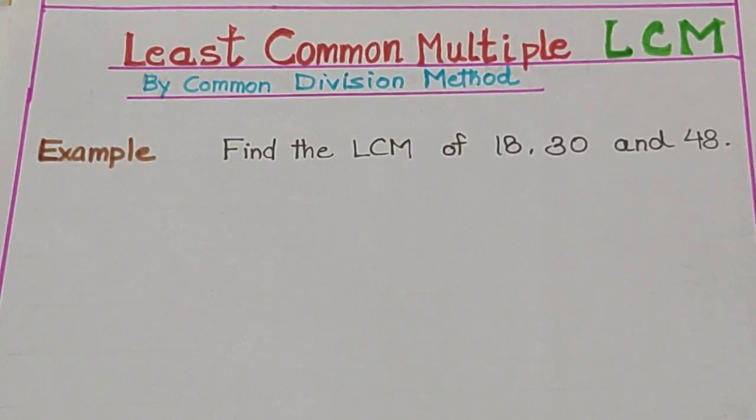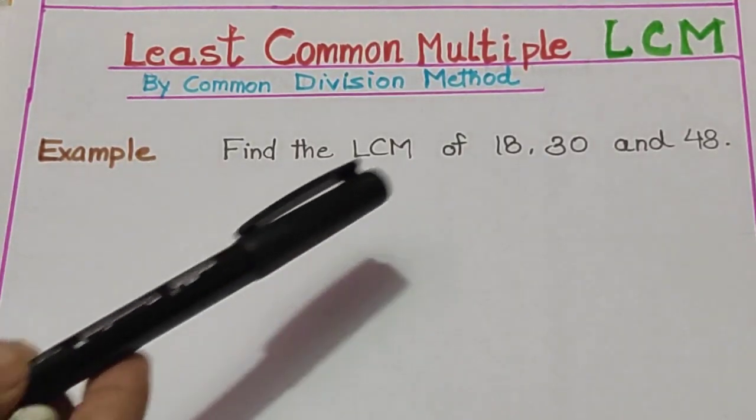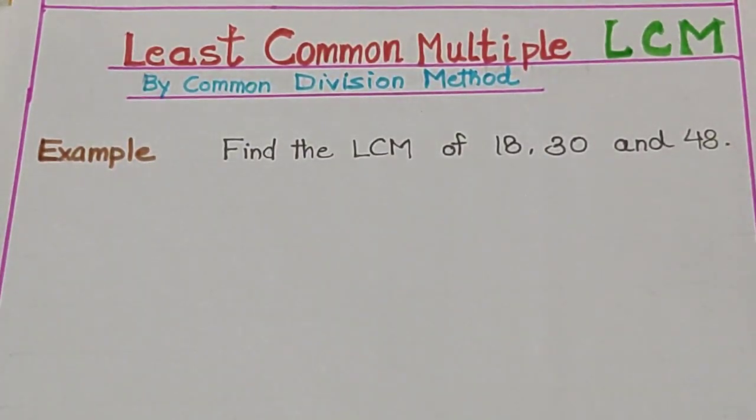So let's take one example, that is find the LCM of 18, 30 and 48. Just like you have factors, you will be able to work it out. So let's see, how do we do it?